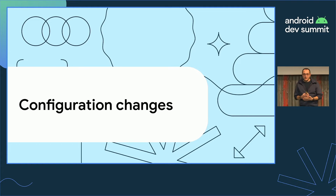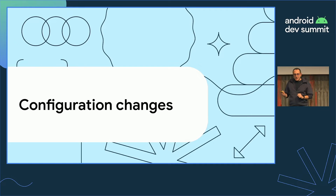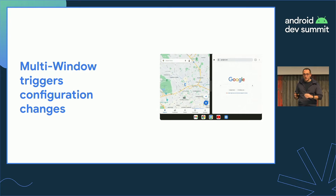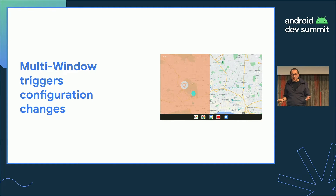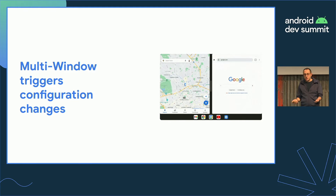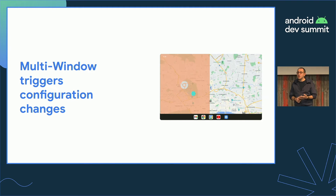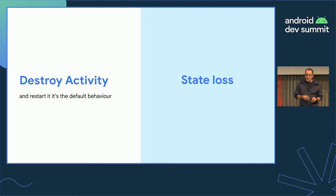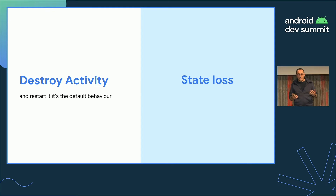Next up, the big elephant in the room: configuration changes. When multi-window is initialized, activities are notified of one configuration change because the size of the window is changing, but it often triggers multiple configuration changes because orientation, size, and position on the screen can all change. The default behavior when configuration changes occur on Android is to kill the activity and restart it, with more often than not a loss of state — be it window content, scroll position, long operations stopping unexpectedly, or wrong position in the navigation hierarchy. All of these will mean a bad experience for your users.